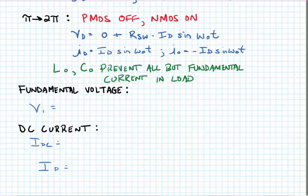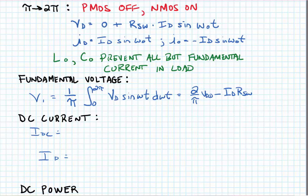Now we can find the fundamental voltage as follows. We can find the DC current. The DC current has an average value of ID over pi. ID is equal to the fundamental voltage divided by the resistance in the network, which is the sum of the switching resistance in the transistors and the optimum resistance of the load.